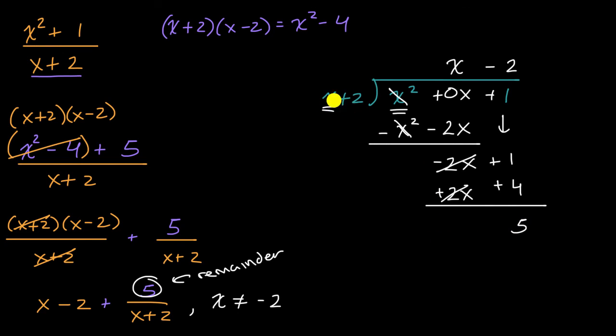And there's no obvious way of dividing x plus two into five, so we would call that the remainder, exactly what we had before. When we divided with algebraic long division, we got x minus two, x minus two, with a remainder of five.